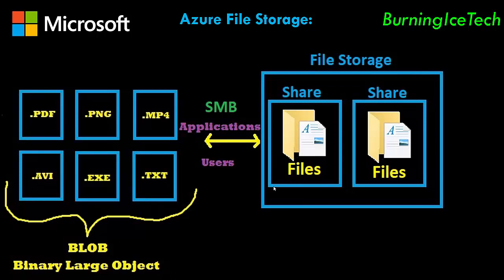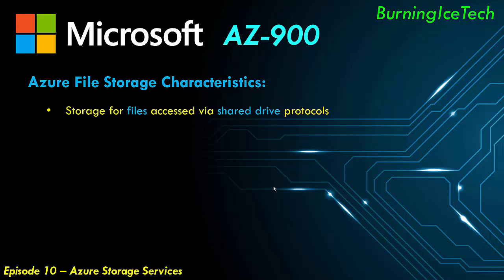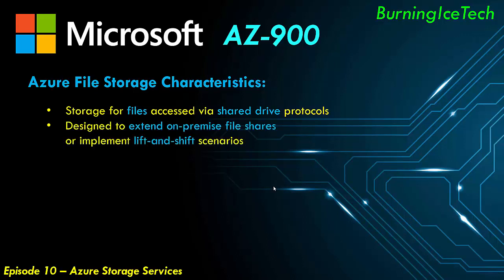The first common scenario File Storage is designed for is as an extension of on-premises file shares. If your company already has existing file shares on-premises and is running low on space, they can use Azure File Storage to add on to the existing space. Since File Storage in the cloud works just like a file server on-premises, you can layer cloud file storage on top of your existing on-premises storage to boost capacity.